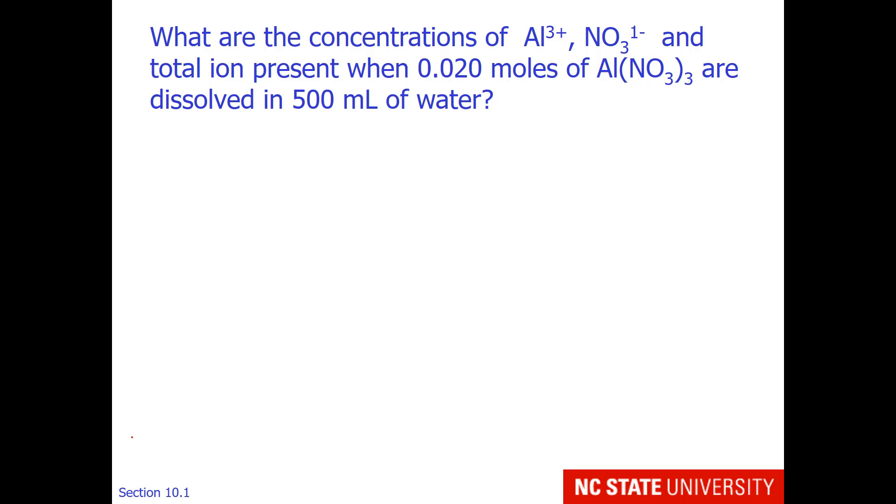I'm going to set you up for another student question by now looking at individual parts. Here's an example where we want to know what are the concentrations of aluminum 3+, nitrate, and total ion when 0.02 moles of aluminum nitrate are dissolved in 500 mL of water. First, what is the stoichiometry of this reaction when it dissolves? Aluminium nitrate makes 1 aluminum 3 plus cation and 3 nitrate anions. Please remember that the stoichiometry is 1 to 1 to 3.